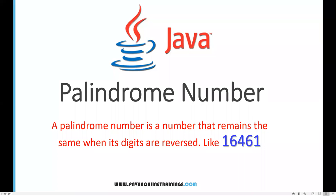Hi everyone, welcome. In this video I'm going to show you how to check if a number is a palindrome number or not. A palindrome number is a number that remains the same when its digits are reversed. For example, 16461 — if you reverse it, you get 16461 again. So this is a palindrome number. Now we'll see how we can do this programmatically.